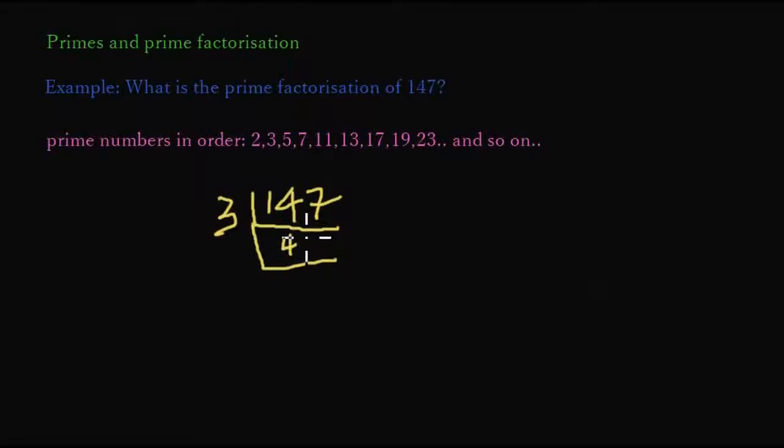Then we continue to see if 49 is evenly divisible by 3. Number 49 does not give a whole number when divided by 3, so we move on to the next smallest prime number, 5. And no, again, 49 does not give a whole number when divided by 5.